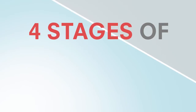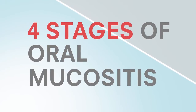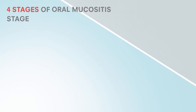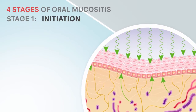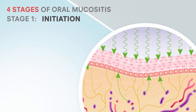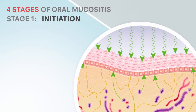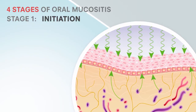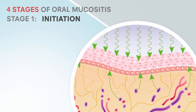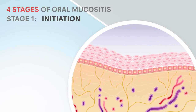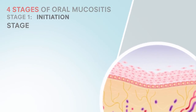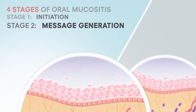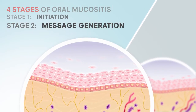There are four stages in the development of oral mucositis. The first is called the initiation stage, where radiation or chemotherapy causes direct injury to the DNA in cells in the mucosa and submucosa, resulting in epithelial cell death. The second stage is known as message generation.